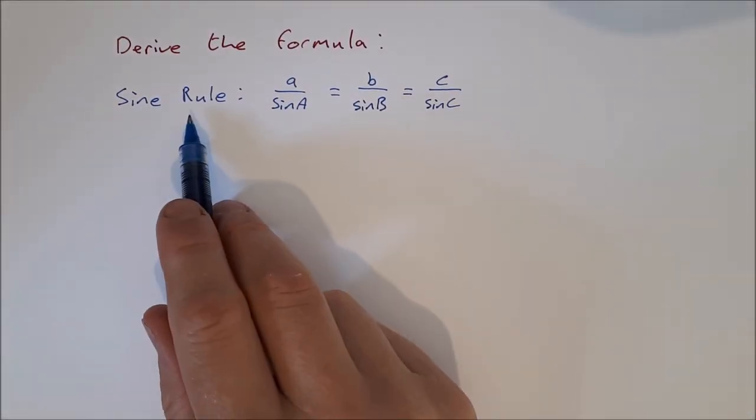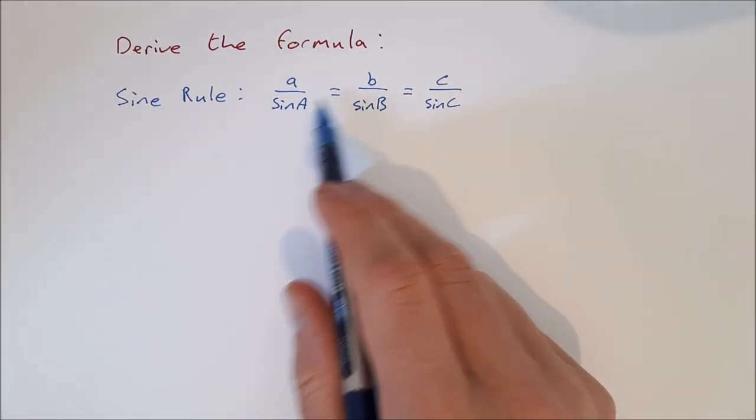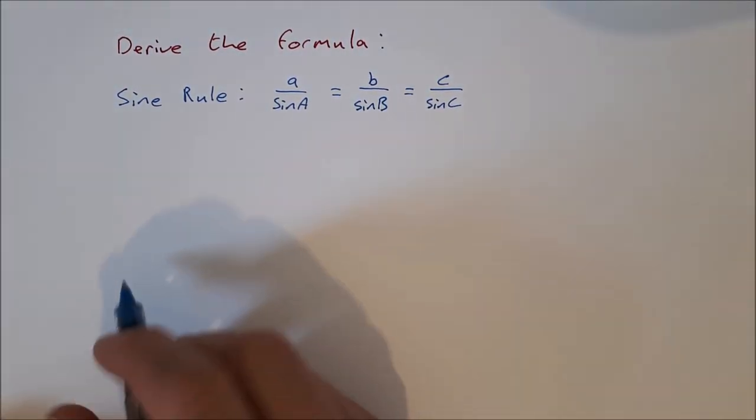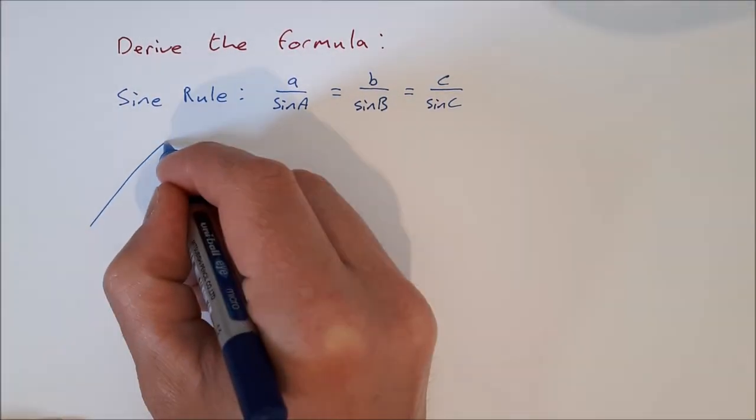Okay, so derive the formula, the sine rule, which is a over sine A equals b over sine B equals c over sine C. So for this one, we need a triangle,